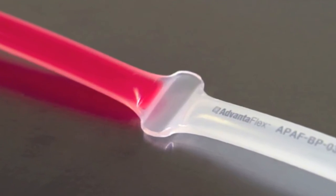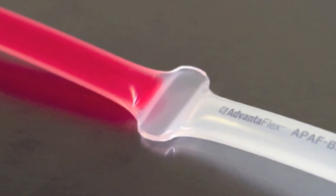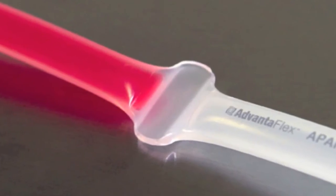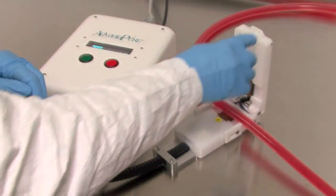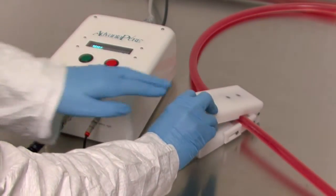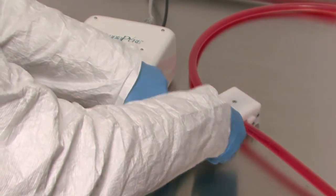Advantiflex's ability to be heat-sealed gives it an advantage over other elastomers like silicone. Sealing separates the tubing into isolated sections for applications such as sampling. Special sealing equipment allows a technician to contain fluid samples within a single length of tubing.